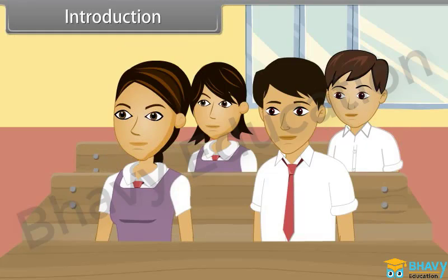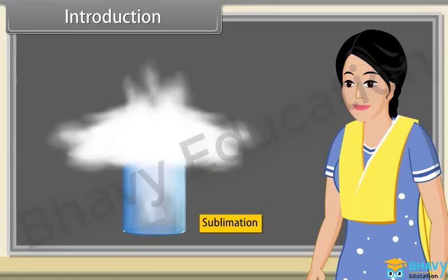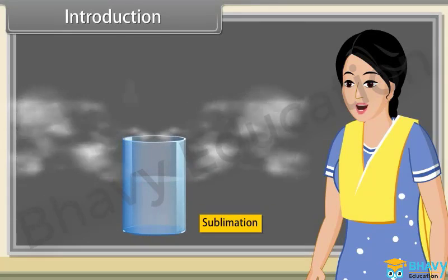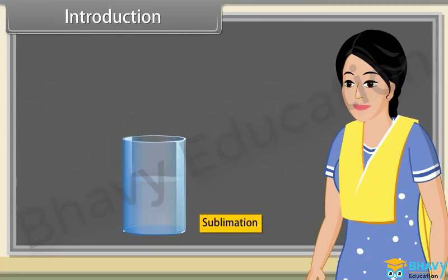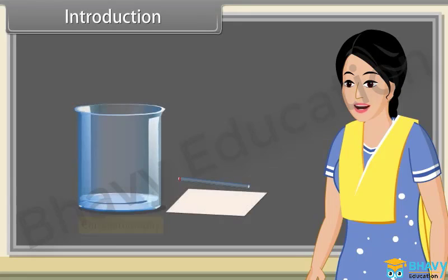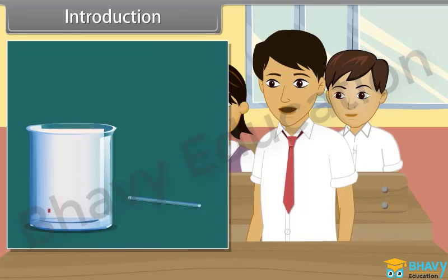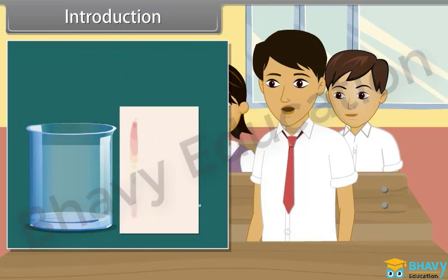What is sublimation? Sublimation is the process in which solid directly converts to vapour state without passing through liquid state upon heating. Now can anybody tell me what is chromatography? Chromatography is a technique used to separate and analyse a mixture of chemicals.